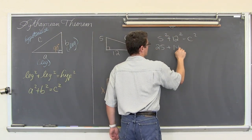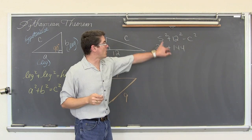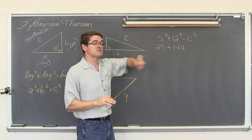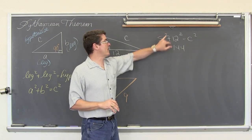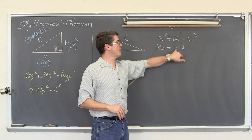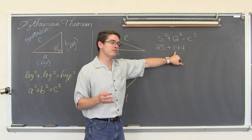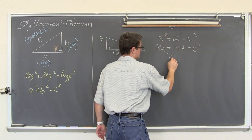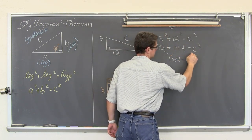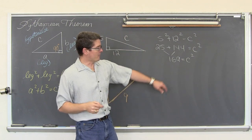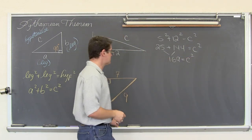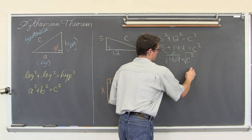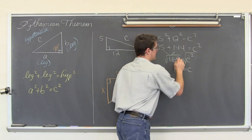12 squared is 144. Note that 5 squared is 5 times 5, not 5 times 2 — that would be 2 times 5. 5 squared is 5 times 5, which is 25. 12 squared is 12 times 12, which is 144. That is equal to c squared. This comes out to be 169 when you add them. You get rid of the exponent of 2 by square rooting both sides of your equation, and you get c is equal to 13.